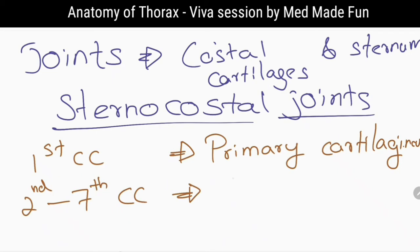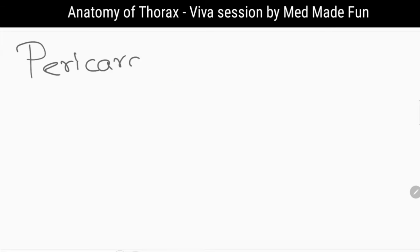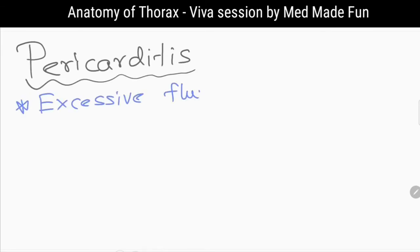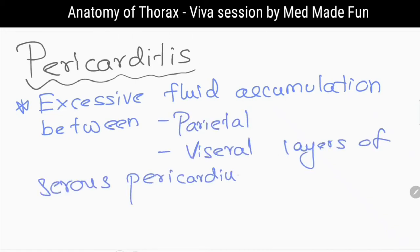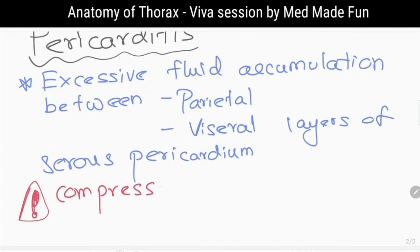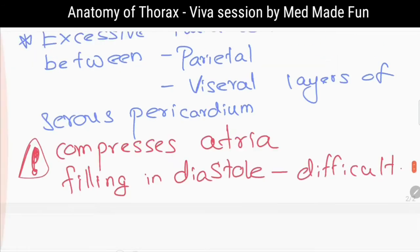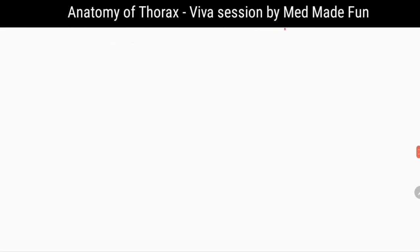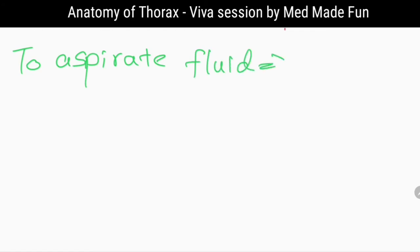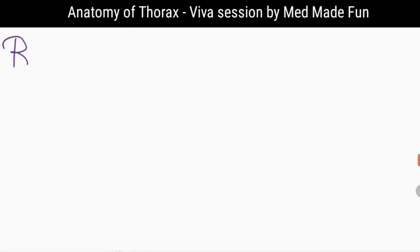What is pericarditis? Due to inflammation of the serous pericardium, excessive fluid accumulates between the two layers — the parietal and visceral layers — compressing the atria and interfering with the filling of the heart. The procedure used to aspirate this fluid is called pericardiocentesis.